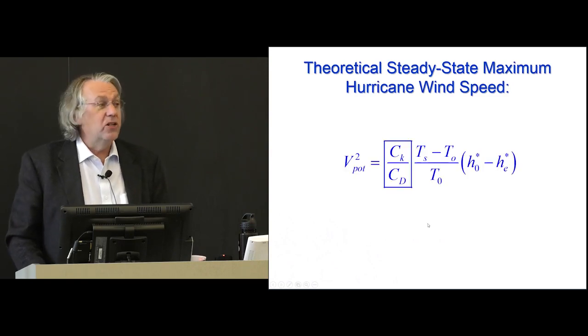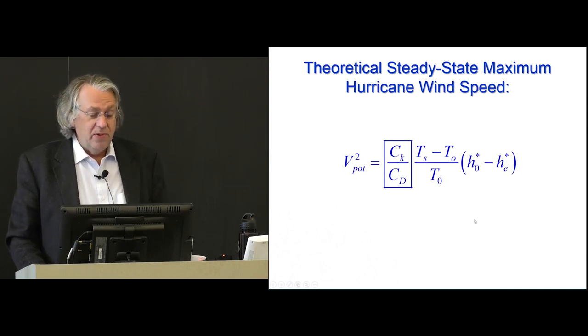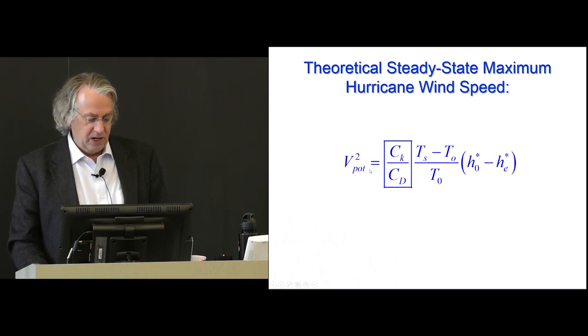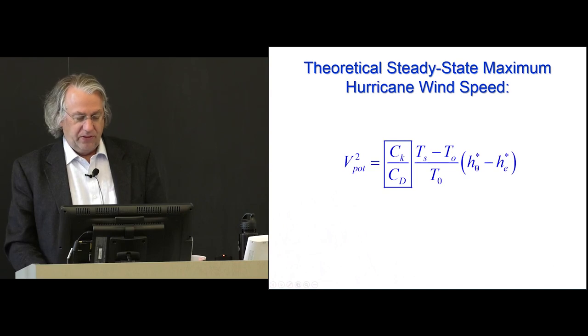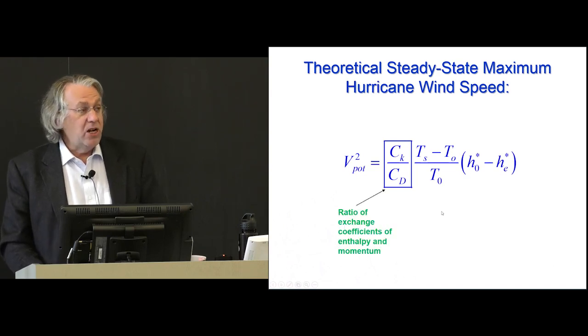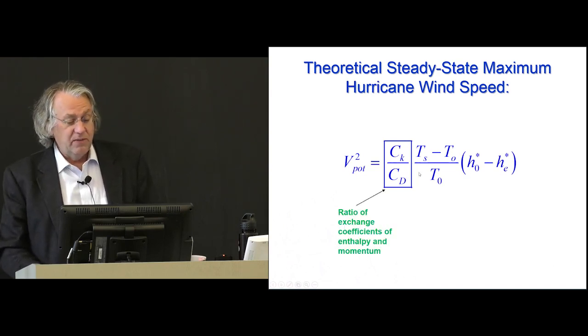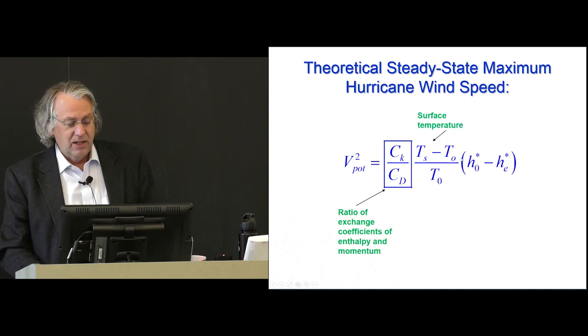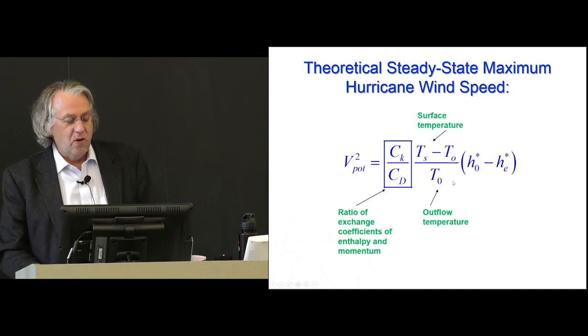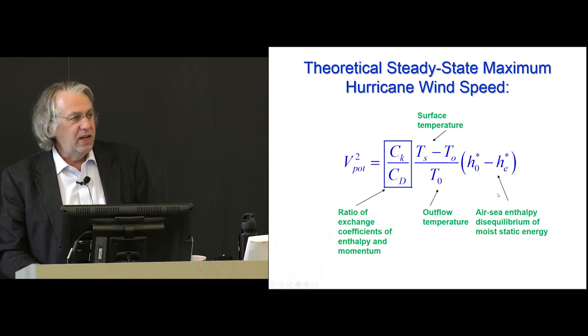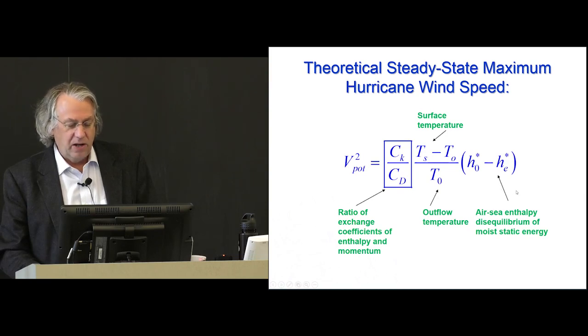This is the only equation I'm going to show you, so patience. You can use that Carnot cycle to develop an equation for the maximum wind speed called the potential wind speed, V potential. The square of it is equal to this stuff. You have the ratio of exchange coefficients for heat and momentum, the surface temperature, the temperature at the top of the storm, which we call the outflow temperature. And this last term is what's driving it, is the disequilibrium between the ocean and the atmosphere. So if you're interested in heat engines and things, you found the perfect one here.